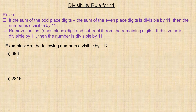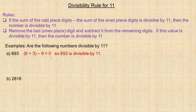First, 693. The odd-place digits are the first and third — that's 6 and 3 — so we add those and subtract the even-place digit, which is 9. So 6 plus 3 minus 9 equals 0. Zero is a multiple of 11, so 693 is divisible by 11.